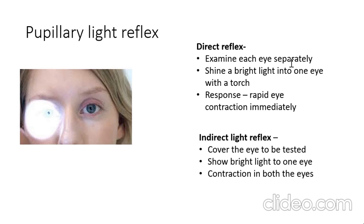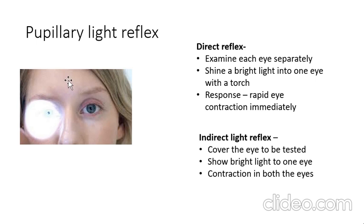Next is the pupillary light reflex, which can be a direct or indirect reflex. Examine each eye separately — shine a bright light into one eye with a torch. The response is pupil constriction. For the indirect light reflex, cover the eye to be tested, shine light into the other eye, and observe constriction in the covered eye as well.